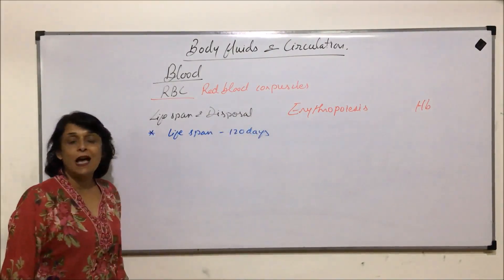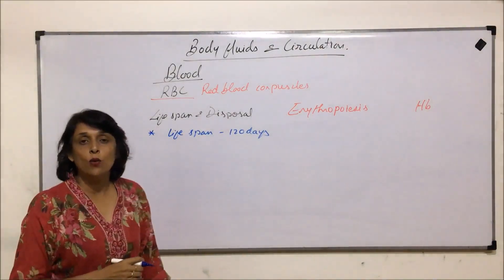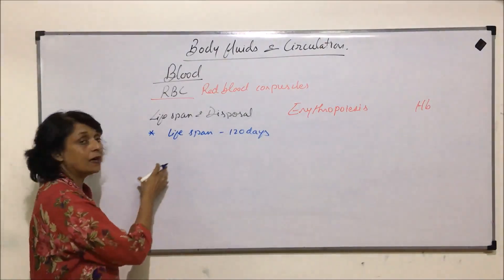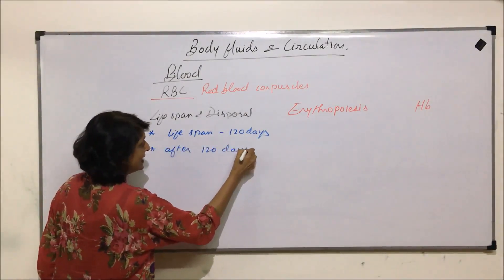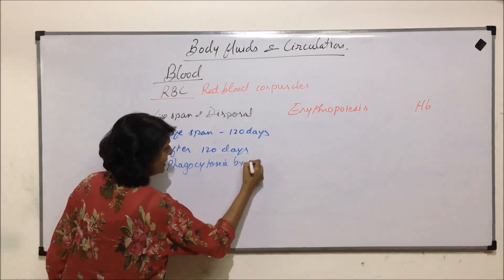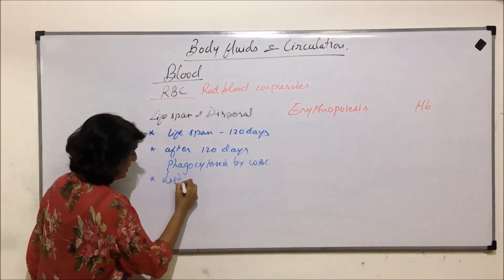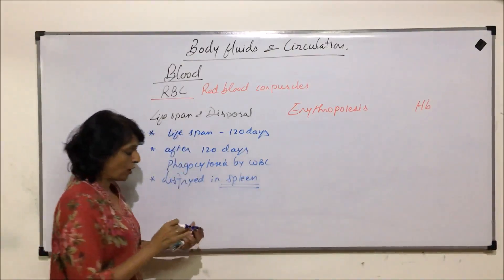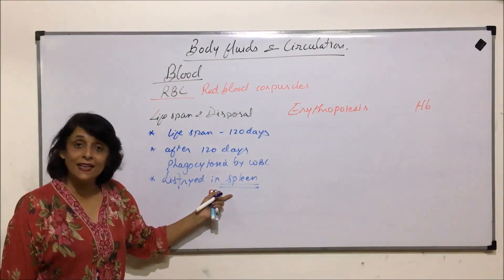Now what happens after 120 days? After completing its life of 120 days, RBCs undergo phagocytosis — that means they are engulfed by the WBCs. They are phagocytosed by WBCs and they are destroyed in the spleen. The spleen is the organ where their production also takes place during the fetal stage, as well as where they are getting destroyed.